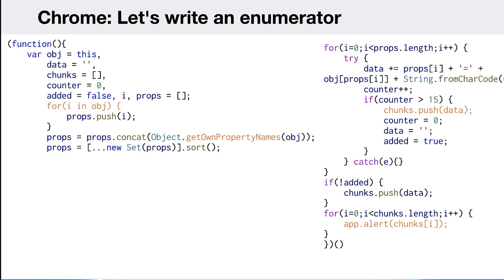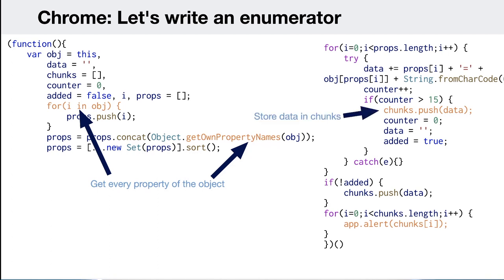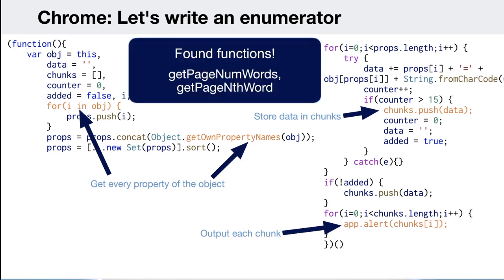I wrote an enumerator and enumerated every object and property. First I did a for loop and used getOwnPropertyNames to gather all properties. Because Chrome doesn't allow the console object like Acrobat does, I had to output data in chunks using a load box. I found some promising functions: getPageNumberOfWords and getPageNthWord — these sound really promising for stealing the contents of the PDF.